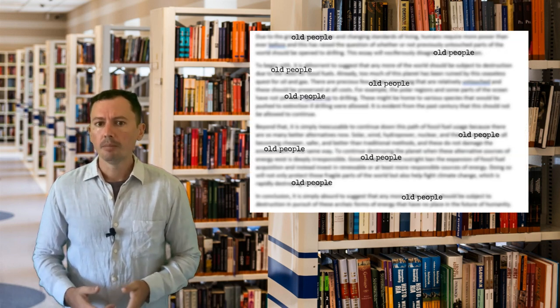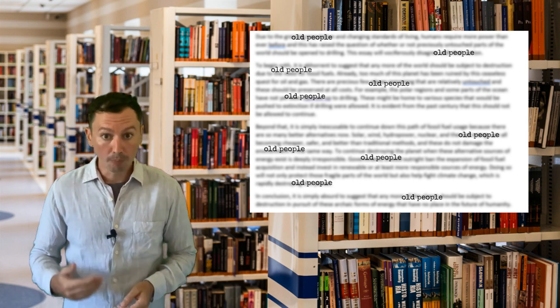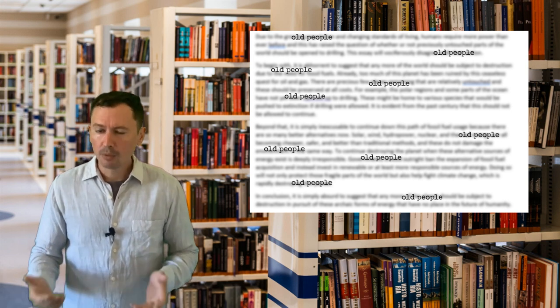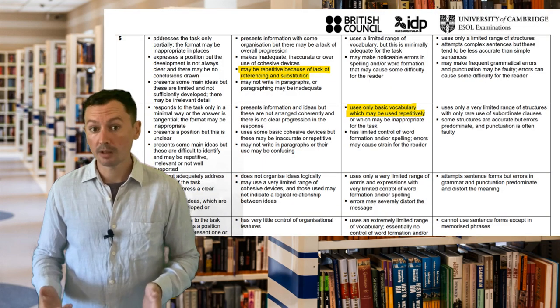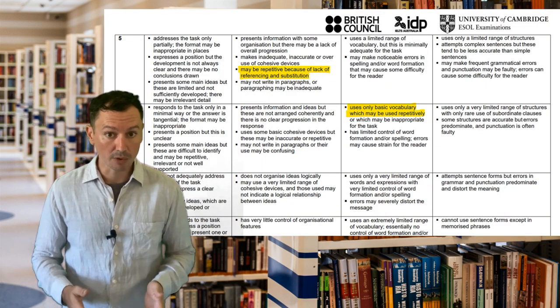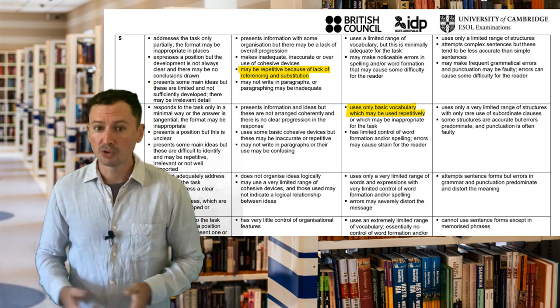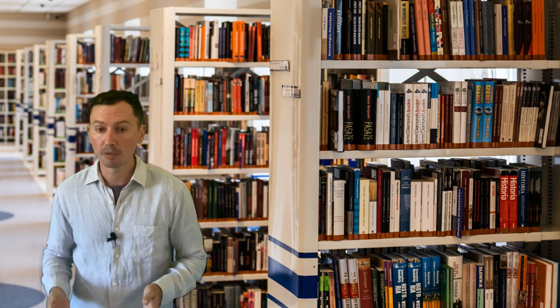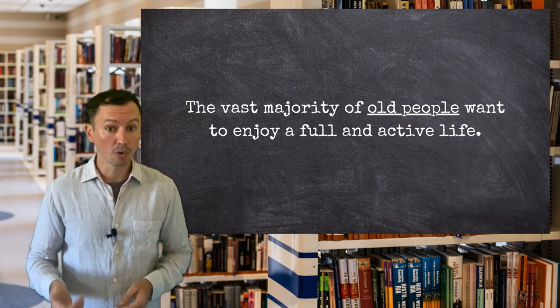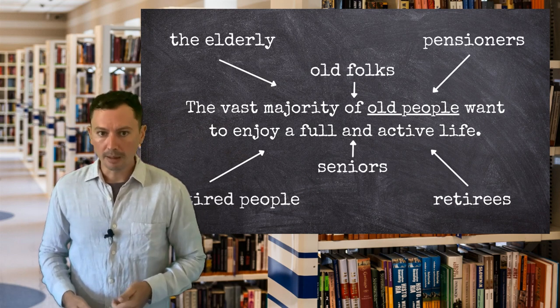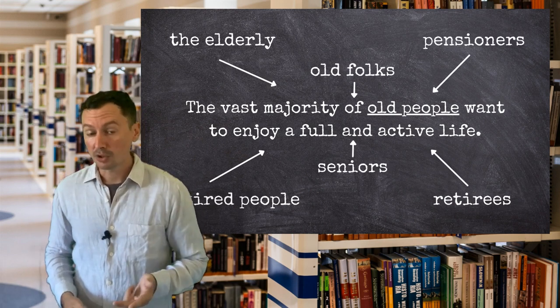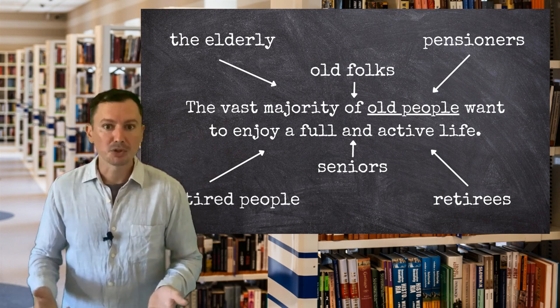Let's say you need to write an essay about retirement ages. You'll no doubt need to talk about old people, but if you just wrote an essay that said 'old people' over and over, it would not be very impressive. In terms of coherence and cohesion and lexical resource, you'd be looking at a very low score. Instead of repeating the same word or phrase, you can find another with approximately similar meaning — for example, you could replace 'old people' with 'the elderly', 'old folks', 'pensioners', 'retired people', 'retirees', and so on.